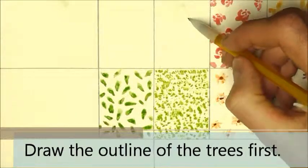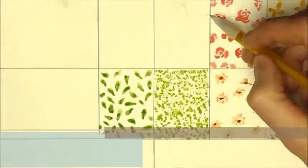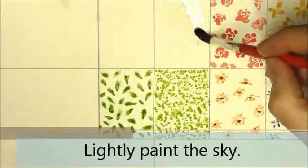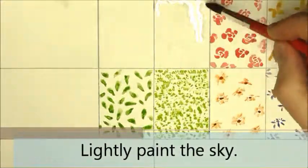When you're starting to paint deciduous trees, you start by sketching them out very lightly and then put a wash over the background for the sky.